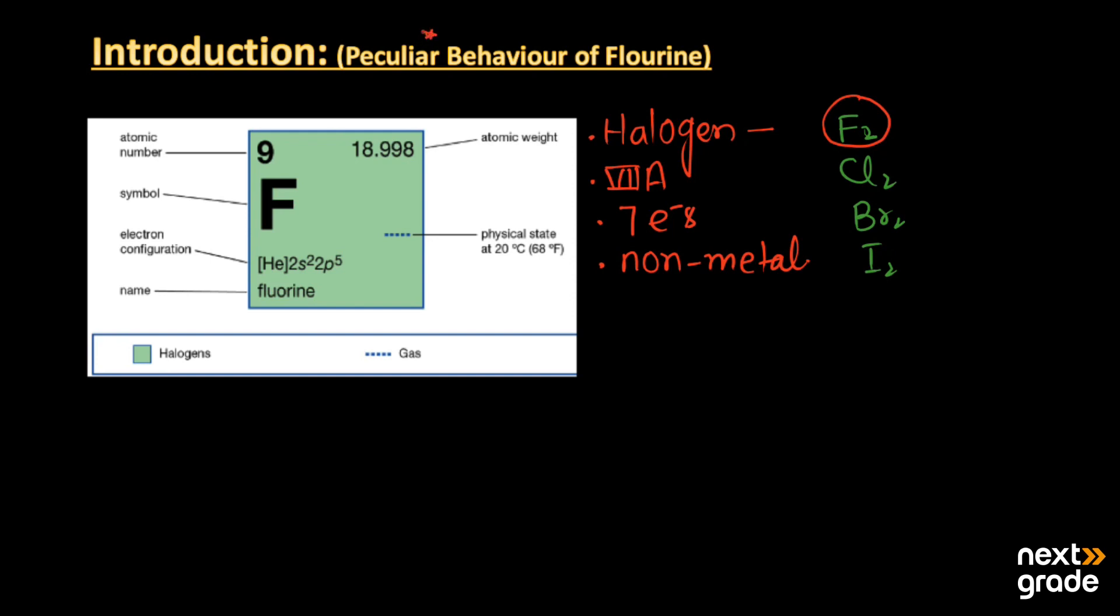Fluorine's atomic number is 9, which contains 9 electrons and 9 protons. Its atomic weight is 18.998, which can be written as 19 grams per mole. Its symbol is capital F. Electronic configuration is helium or Ne 2s2 2p5, so the whole is 1s2 2s2 2p5.